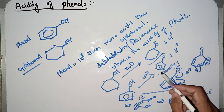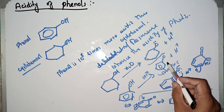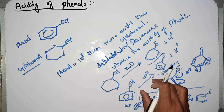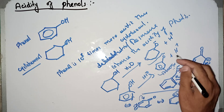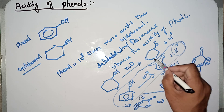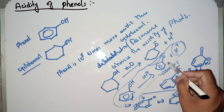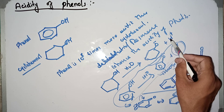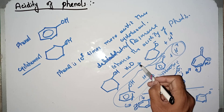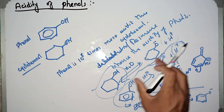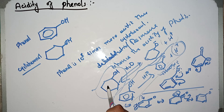In the phenoxide ion, the negative charge is in delocalization — in motion through resonance — so it has less reactivity and more stability. Therefore, in the solution of phenol, the hydrogen ion concentration is greater, making phenol more acidic. In the case of cyclohexanol, the alkoxide ion is reactive, attacks the proton again, and the equilibrium shifts toward the left, so the hydrogen ion concentration is lesser.